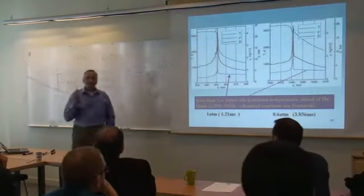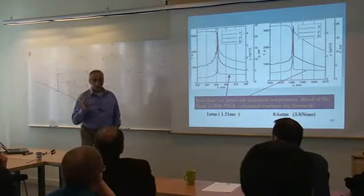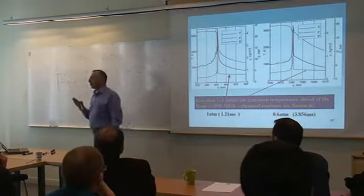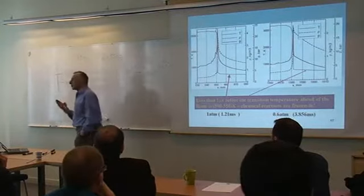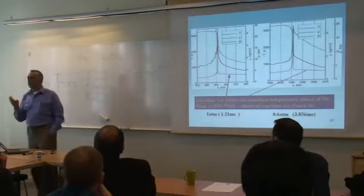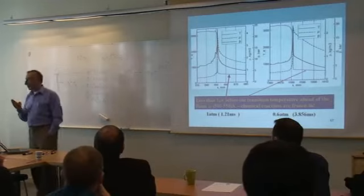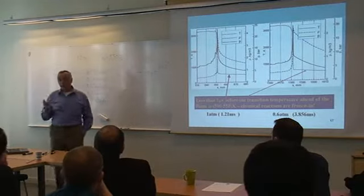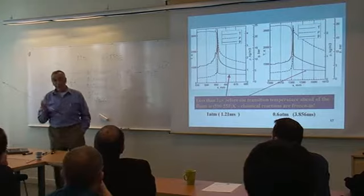Temperature ahead of the flame is below 500–550 Kelvin, which means that reaction is totally frozen in front of the flame. This means there is no possibility for the gradient mechanism — the gradient mechanism does not work in this case.